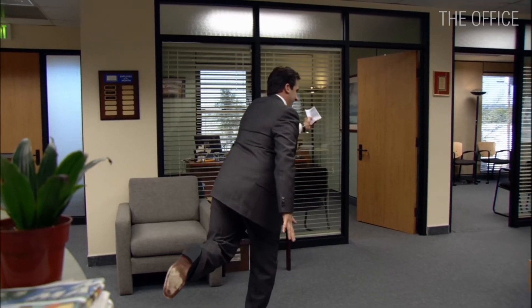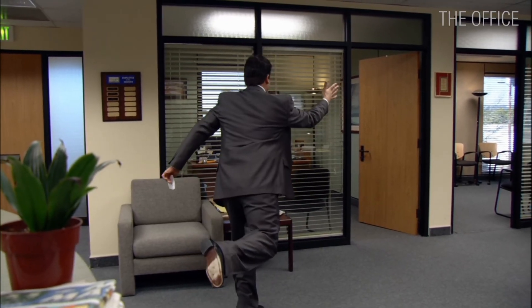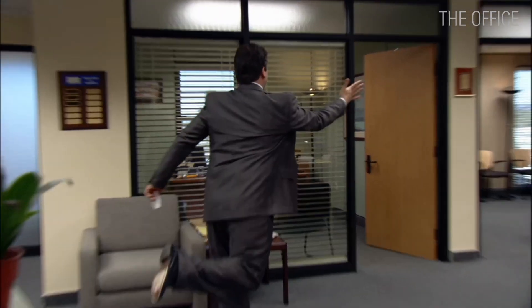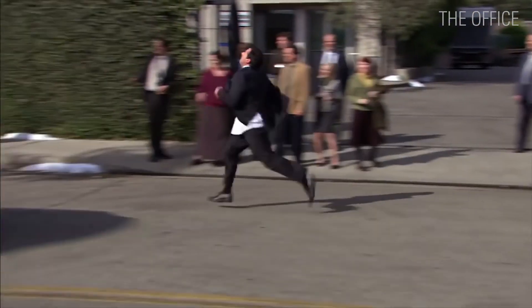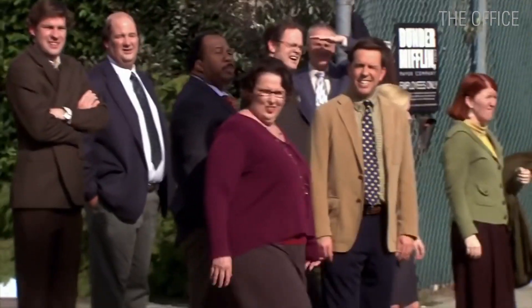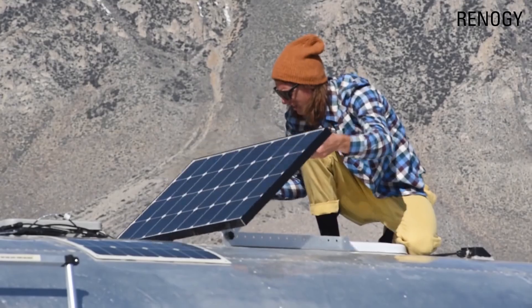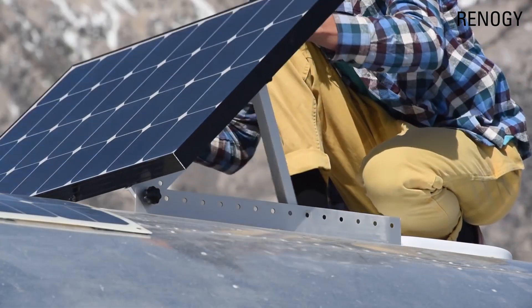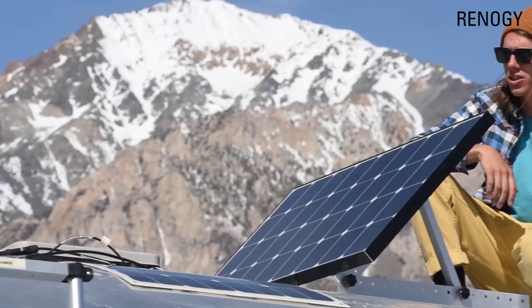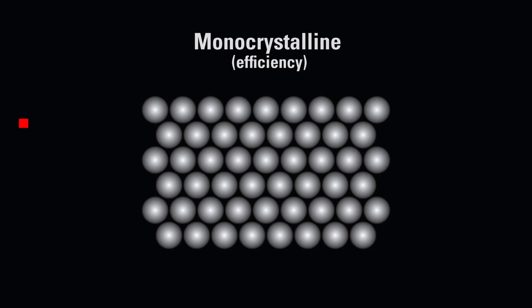When monocrystalline panels were first invented in 1941, they had less than one percent conversion efficiency, but it has now reached 26.7% in a lab under ideal conditions. Their average efficiency is between 17 and 22 percent, making them the most efficient type of panel on the market. Since they are made of a single continuous unbroken crystal, there are no barriers or grain edges, so the electrons have more room to move around, which equates to more electricity generated.